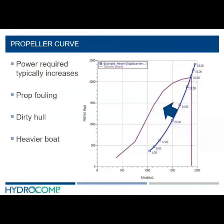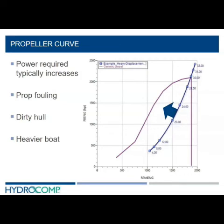First, let's think about the life of the boat. As the propeller gets dirty, the hull gets rougher, and the boat inevitably gets heavier, this minimum curve increases. It's never going to reduce — it's only going to get worse as things get dirtier, heavier, and rougher.